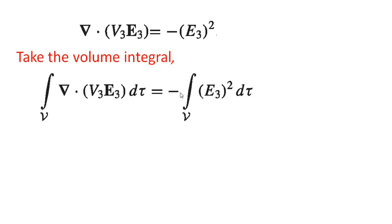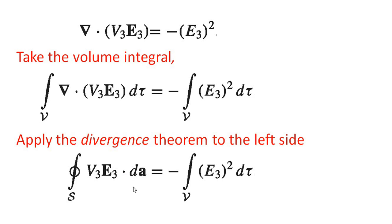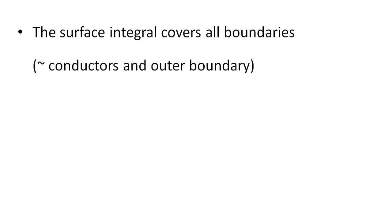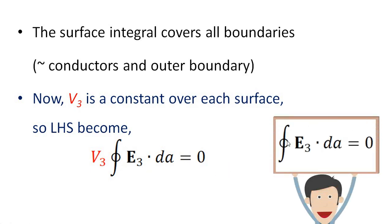Taking the volume integral: the volume integral of del dot (V3 E3) d-tau equals minus the volume integral of E3 squared d-tau. Applying the divergence theorem to the left side, the volume integral becomes the closed surface integral of V3 E3 dot da. The surface integral covers all boundaries — the conductor surfaces and the outer boundary. Now, V3 is constant over each surface, and the integral of E3 dot da is zero, so the left-hand side equals zero.